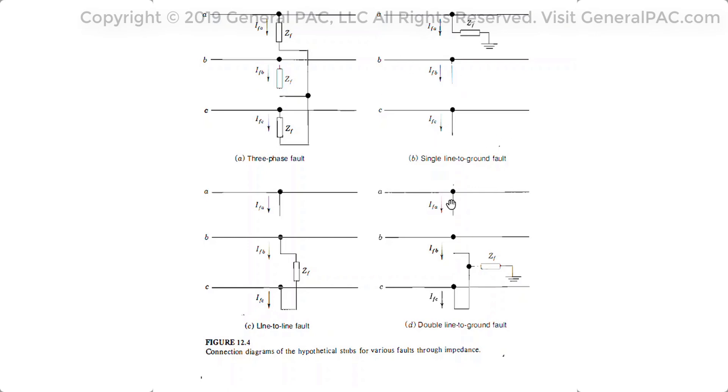So for a single line to ground fault, in terms of symmetric components, single line to ground fault have positive, negative, and zero sequence components. And typically all three components are the same magnitude and the same angle.